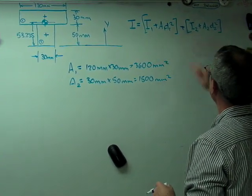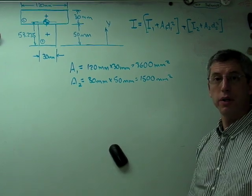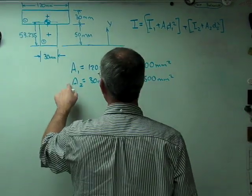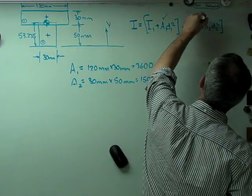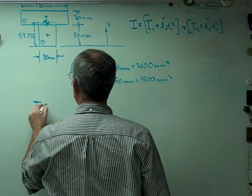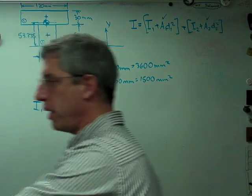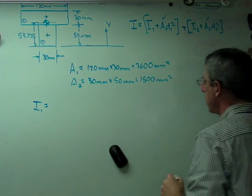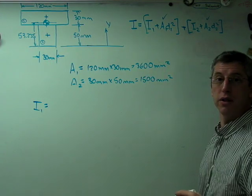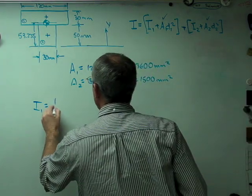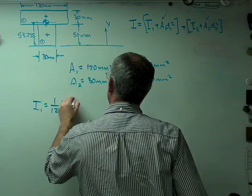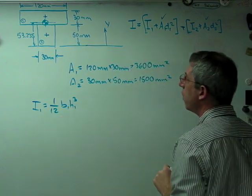So again, let's start by calculating all the components in that expression. We've got A1 and A2, so we've got that. Let's try I1 now.